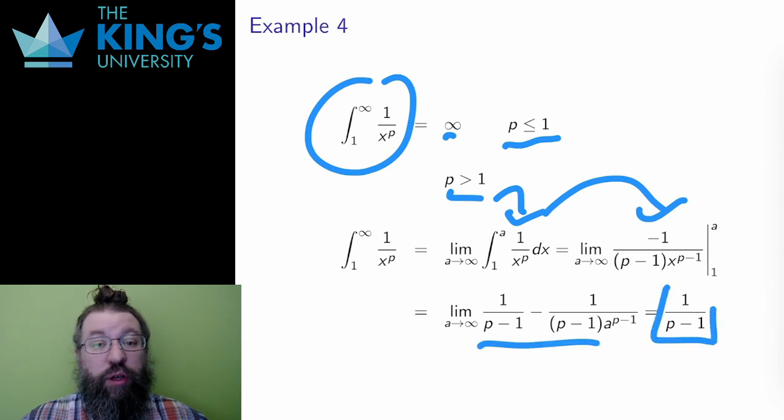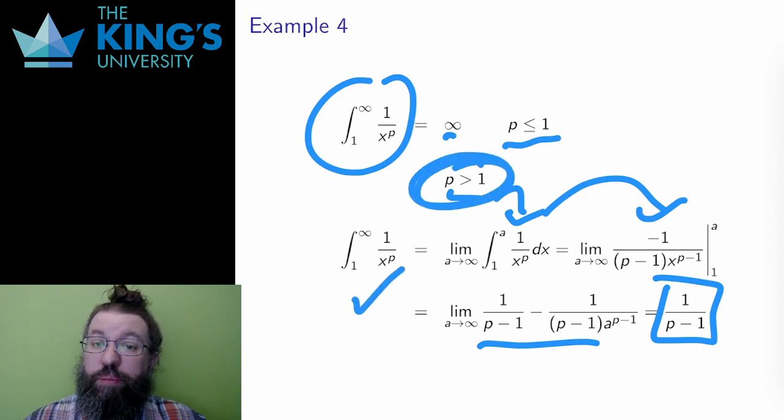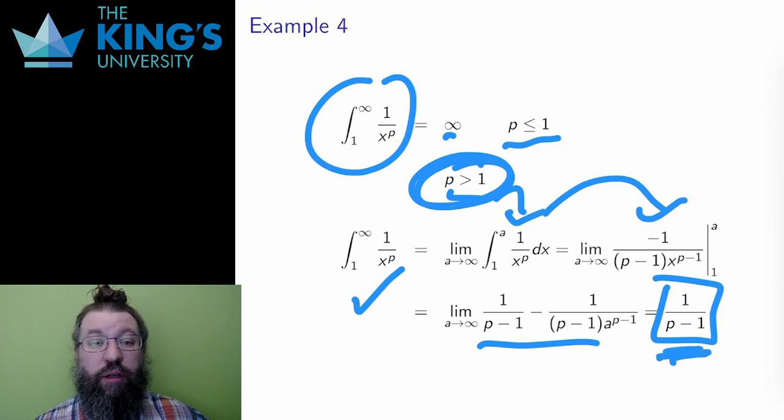and the result is 1 over p minus 1. So as long as p is even slightly larger than 1, the area under the curve is finite, and the larger p is, the smaller the area is, which makes some sense, since a larger power in the denominator leads to a function that will decay faster.